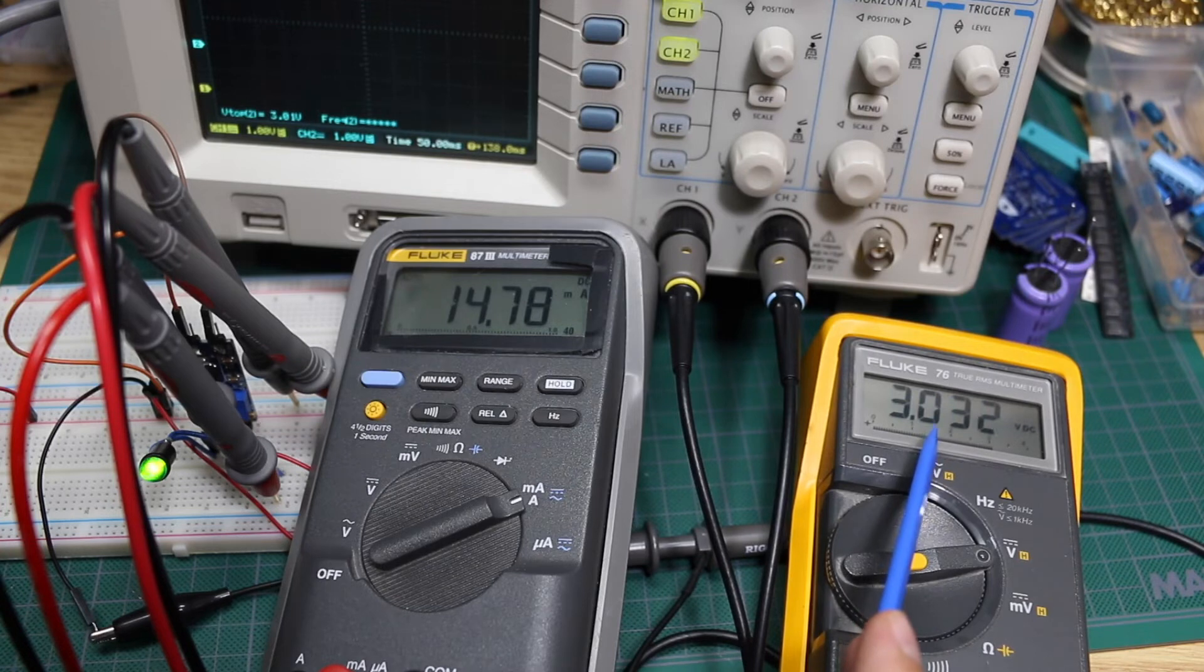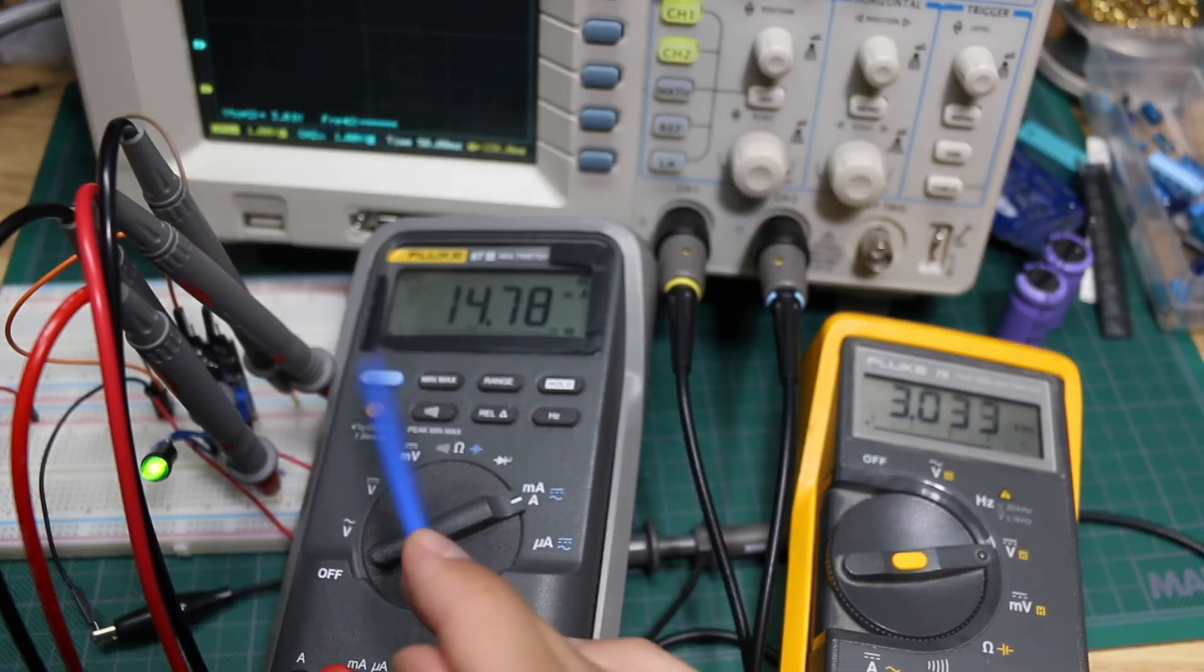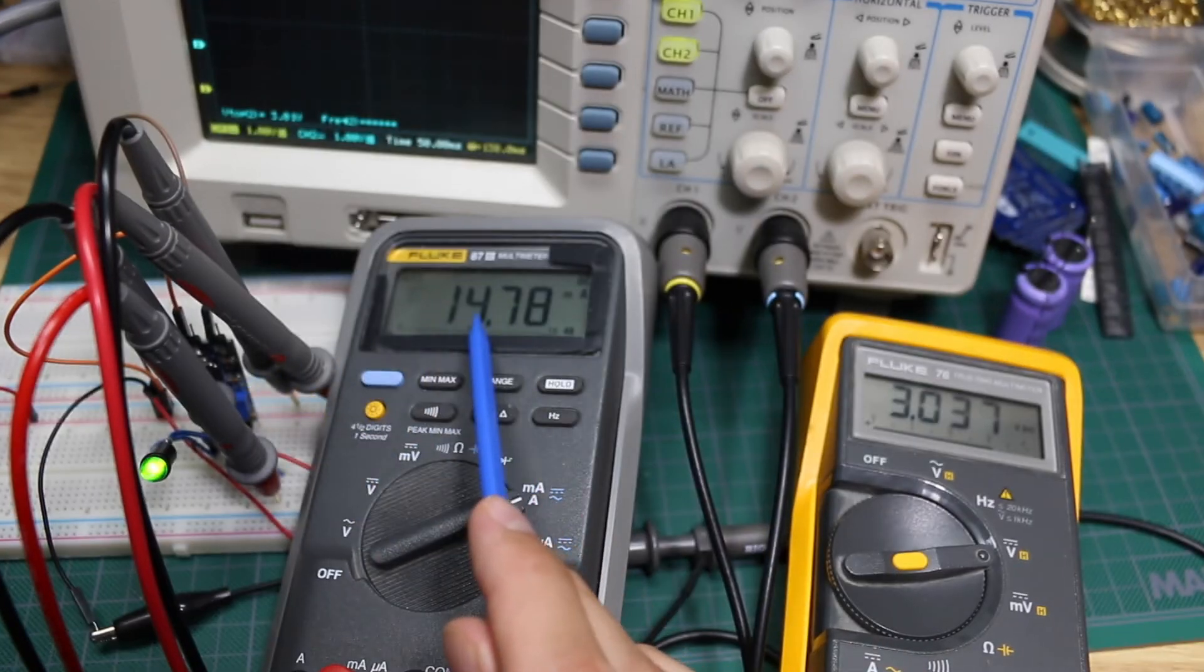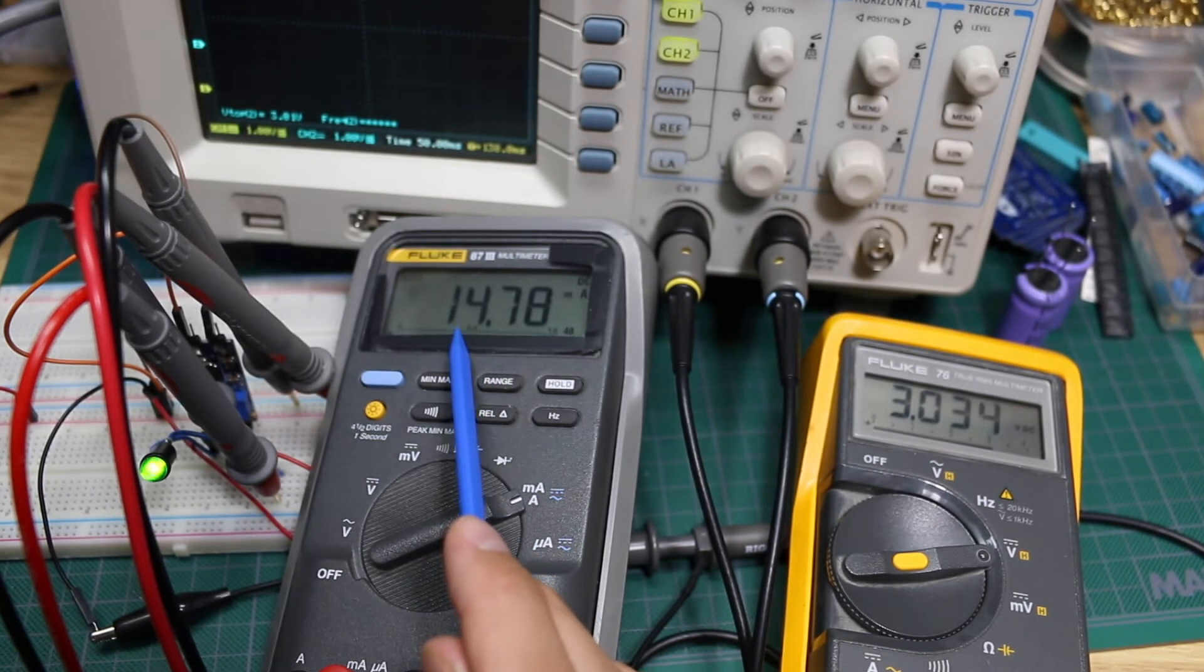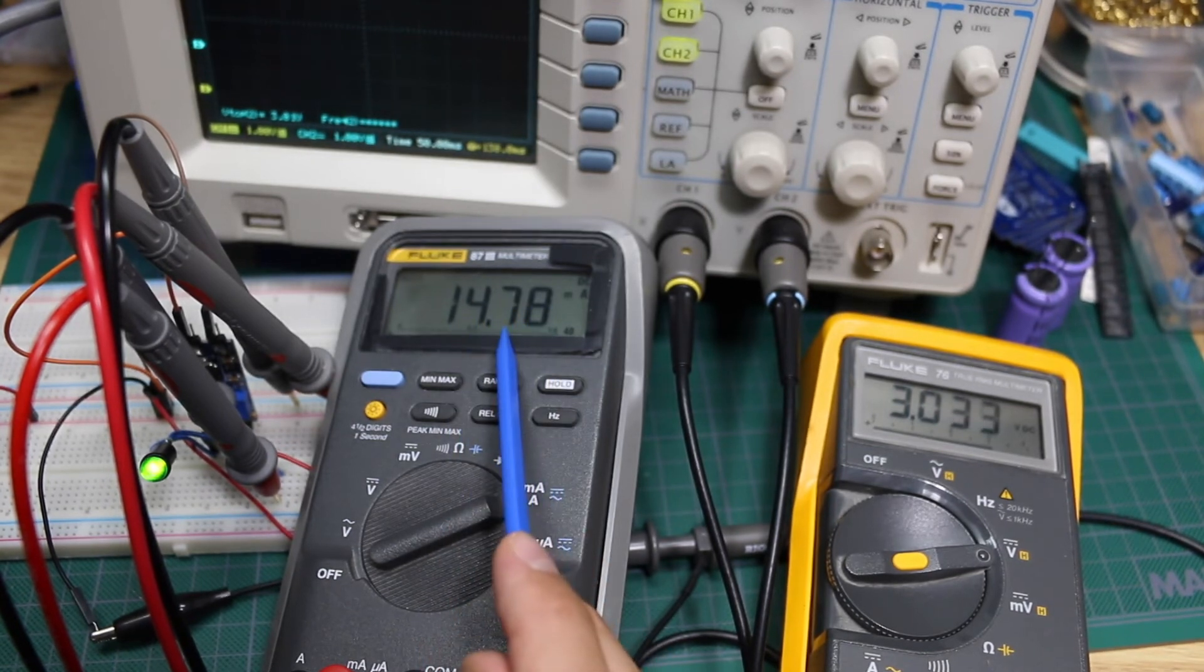The output of this boost converter draws 14.77 milliamps to turn on the light. As I lower the input voltage down toward 2 volts, the boost converter's output current stays fixed at 14.77.